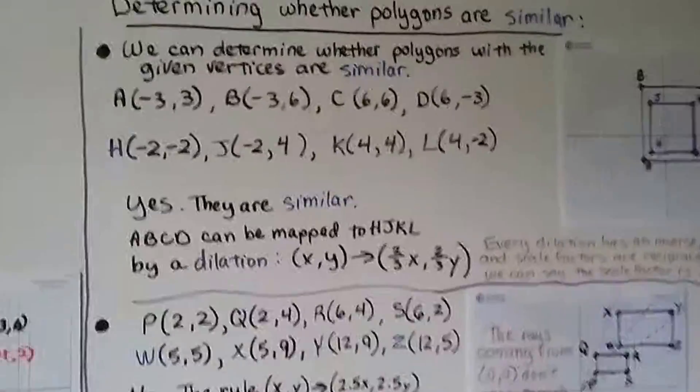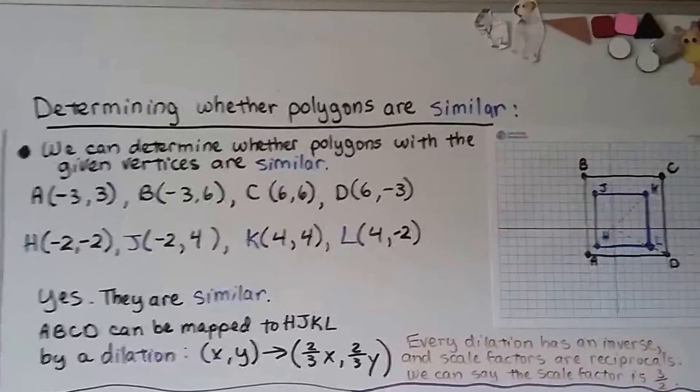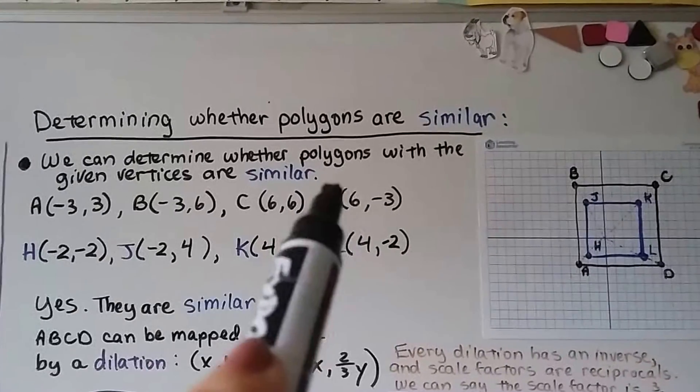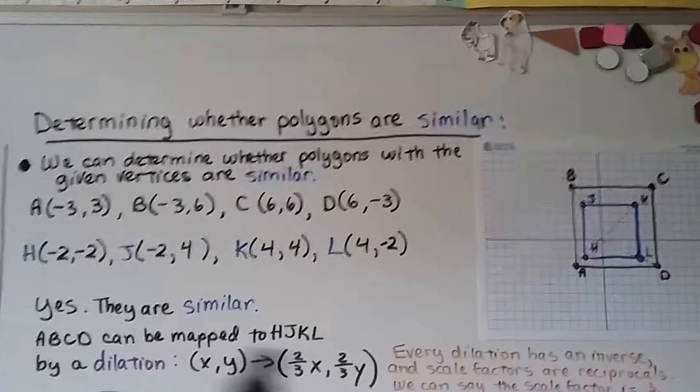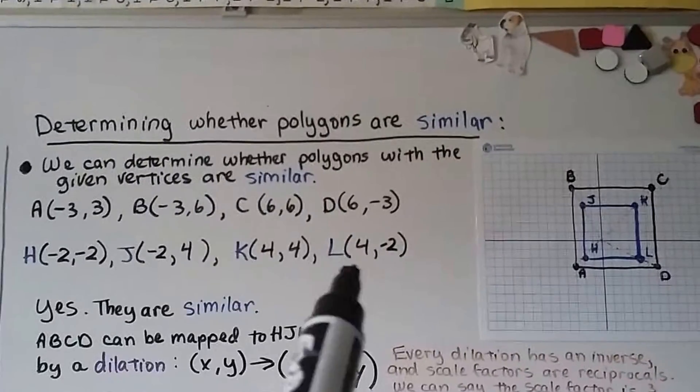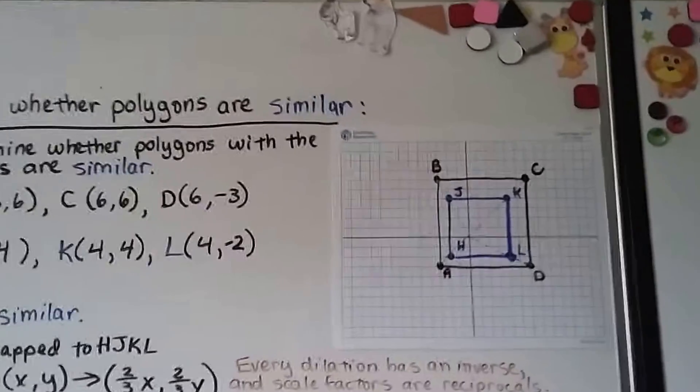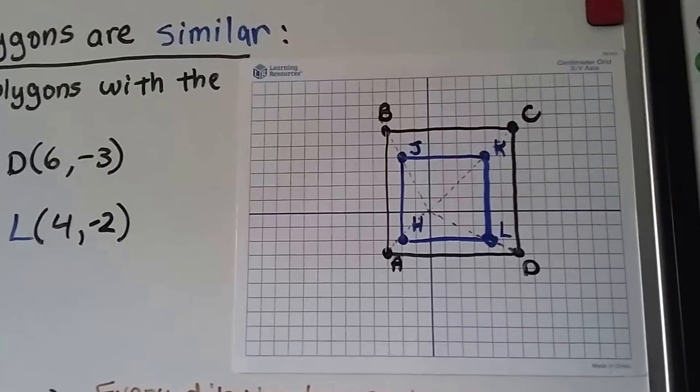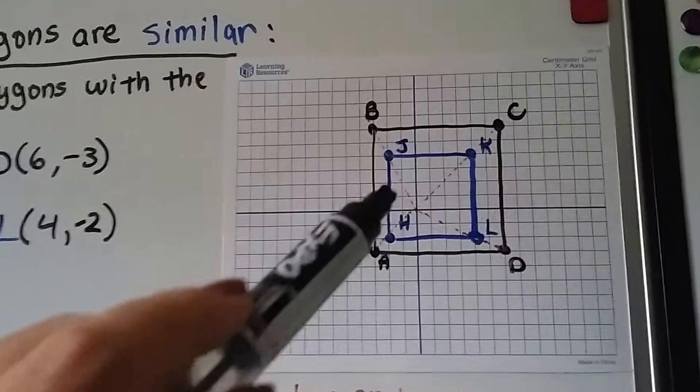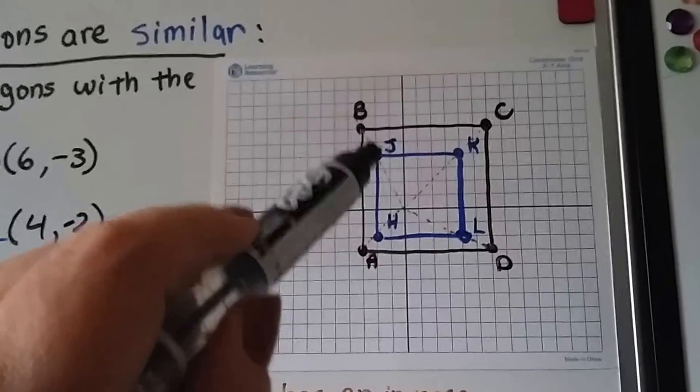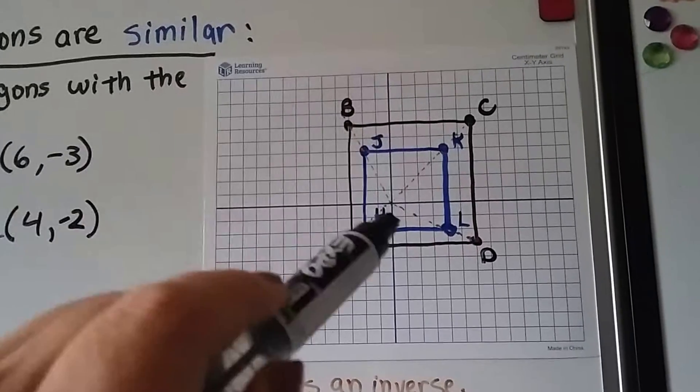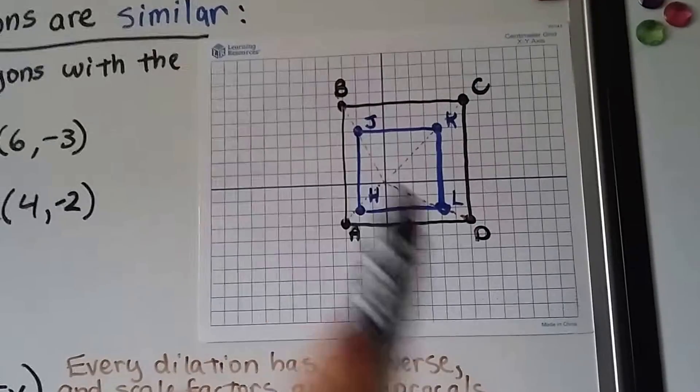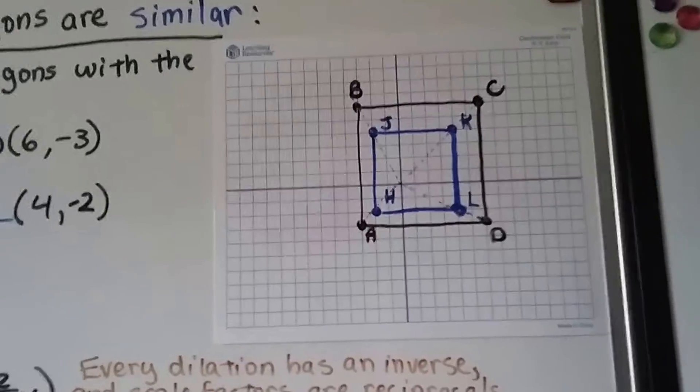Here's determining whether polygons are similar. We can determine whether polygons with the given vertices are similar. So we've got A, B, C, D and the ordered pairs, and we can graph that. And we've got H, J, K, L, the ordered pairs, we graph that, and we end up with these two triangles. ABCD is the black one, and HJKL is the smaller blue one. And when we draw rays from the origin through J to B, they go through the same ray, and we have K and C going through the same ray, and L and D going through the same one, and H and A going through the same one.